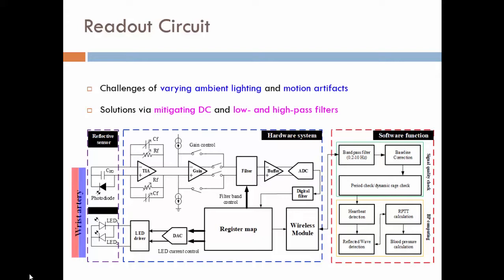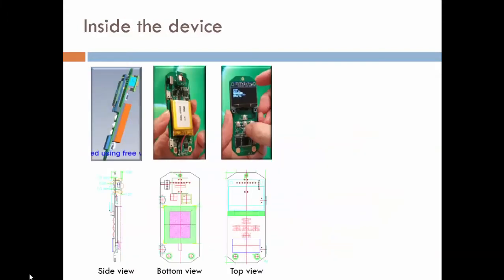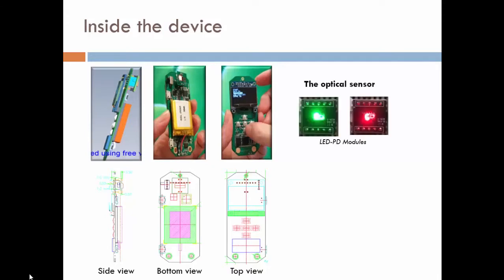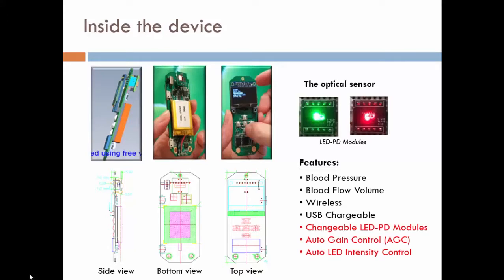By doing that, you will have a chance to have a high quality label of a PPG signal. Then you will be able to have a better accuracy in estimating blood pressure. So inside this sensor module, as shown in the photo, there is a single PCB board, two sided. At one side, there's battery, LED PD, and front end analog circuits. On the other side, there is a display panel and MCU and wireless data transmission module.